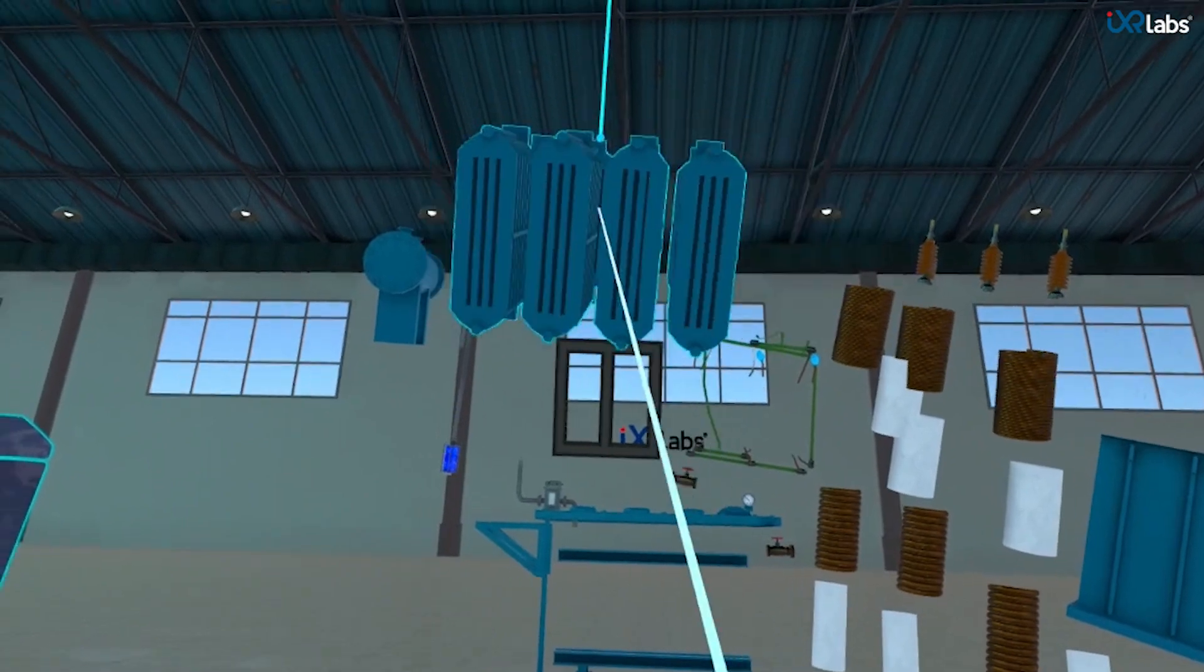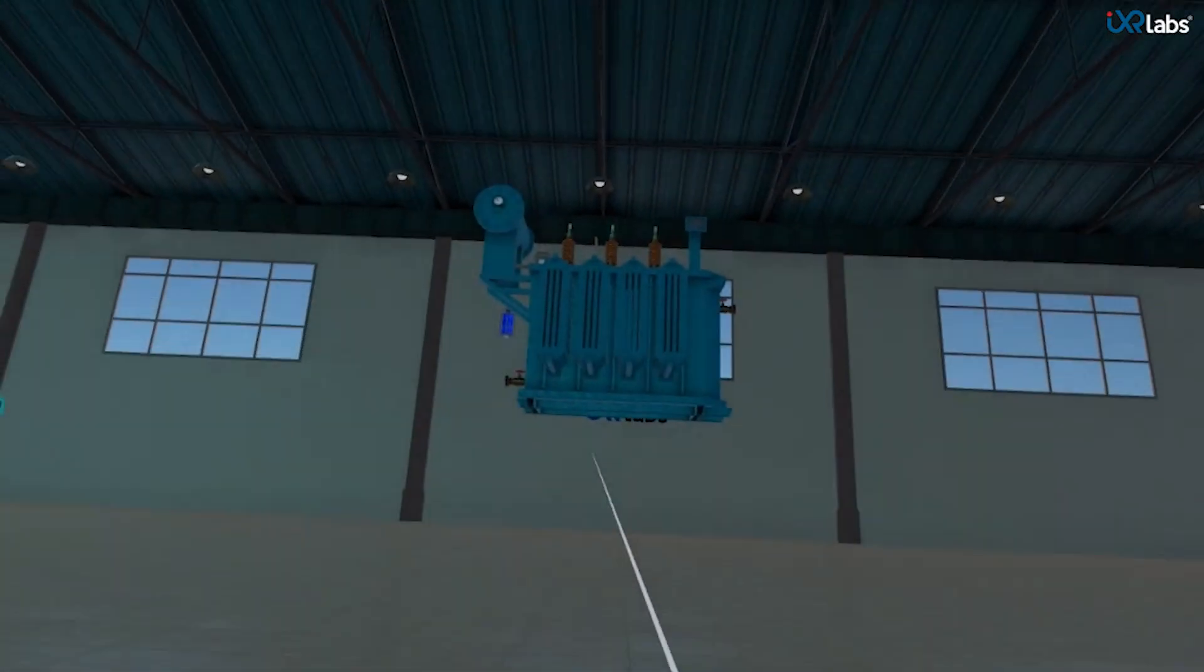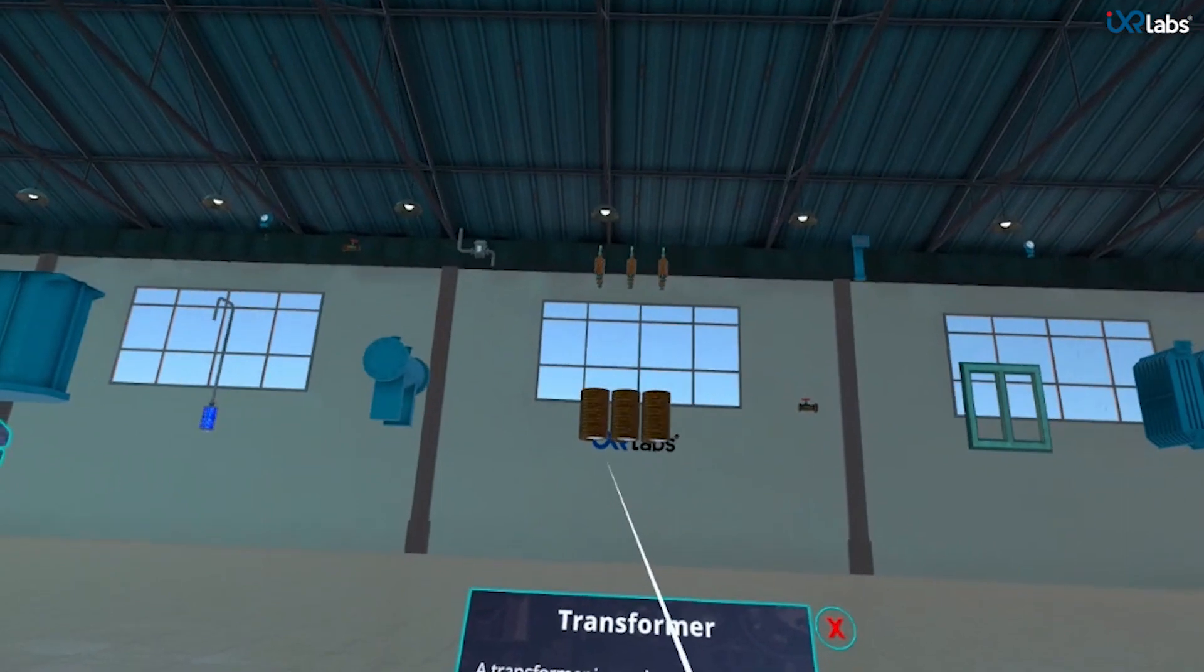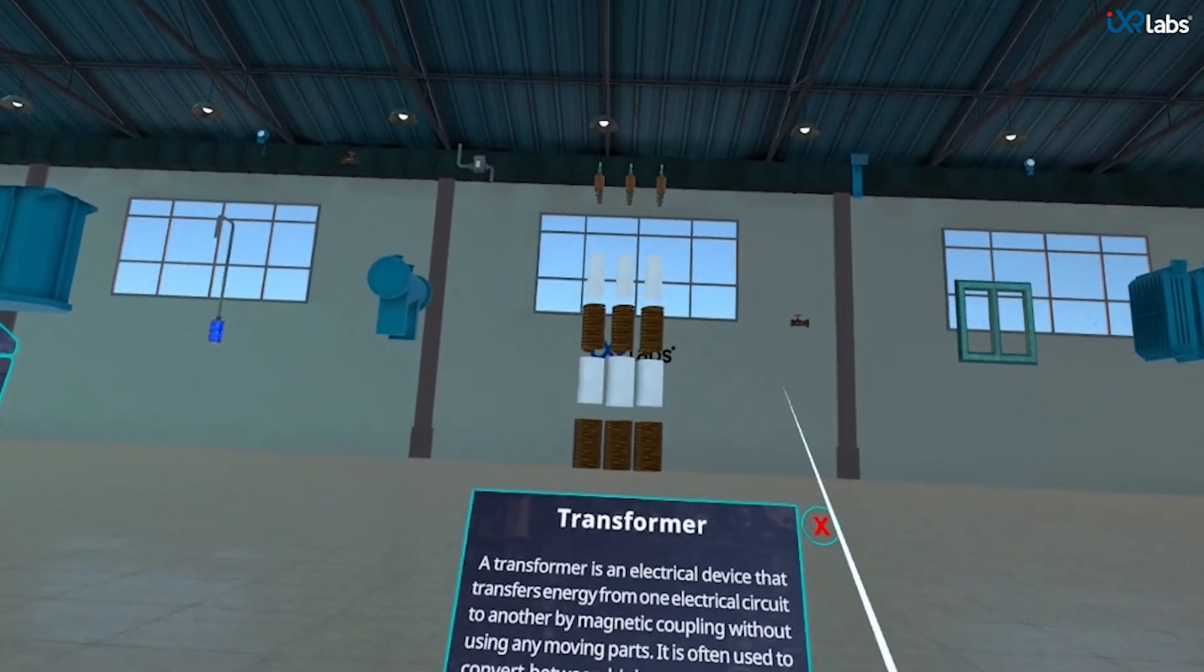To know more about each part of the transformer, let's click on the separate parts option. The transformer splits into its constituent parts across the virtual space and a brief description of the transformer pops up.